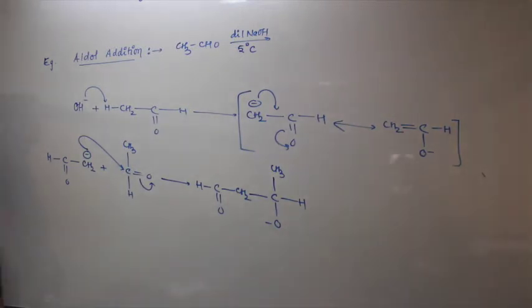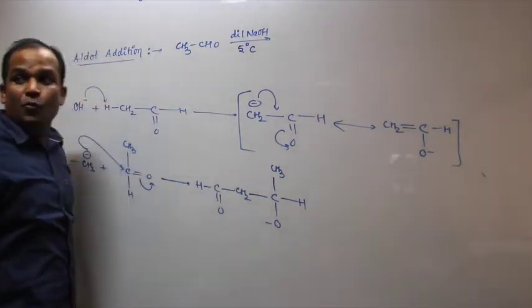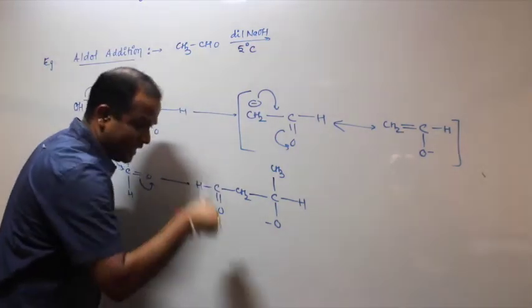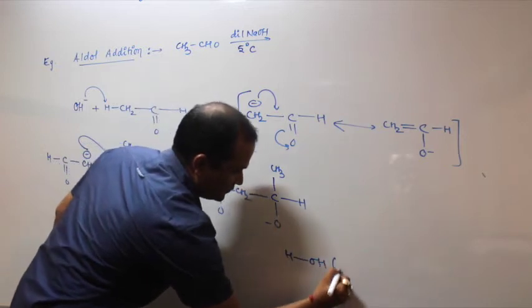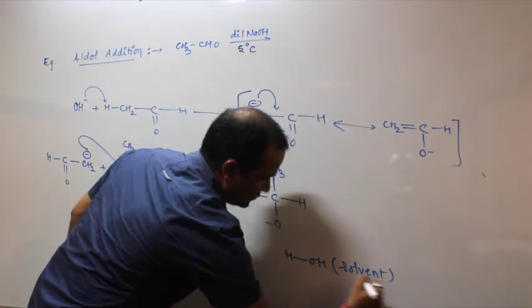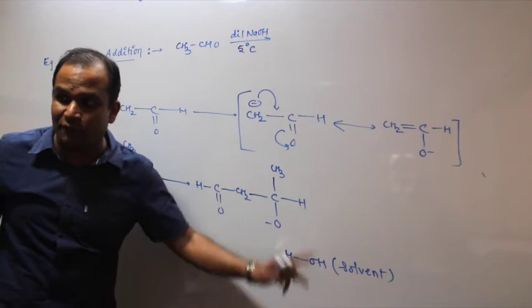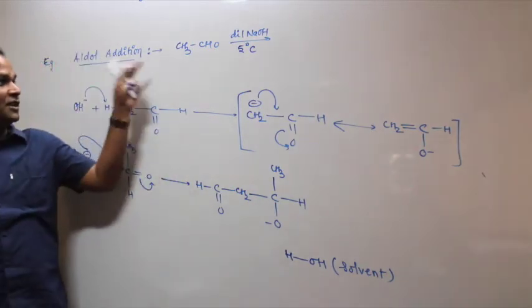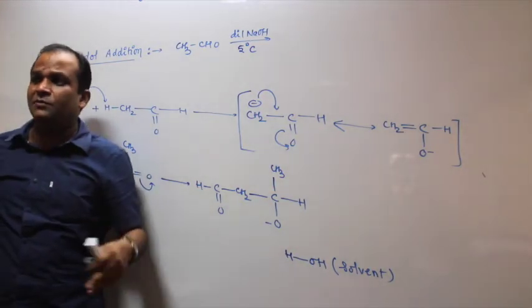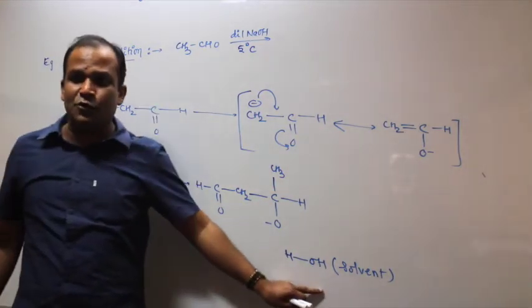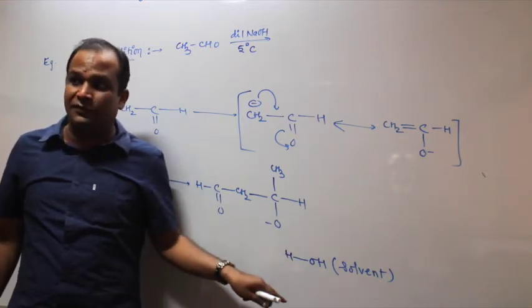Clear? And this particular compound is O-, this O- will take hydrogen from solvent. Hydrogen you can take it from, for example, if I have given you here dilute NaOH and water, and what is D2O - this shows that the source of hydrogen is solvent.